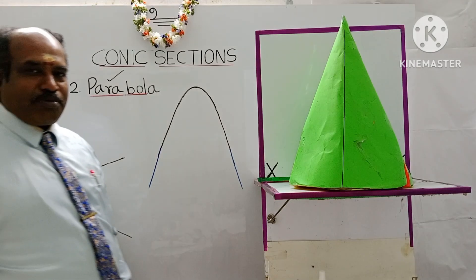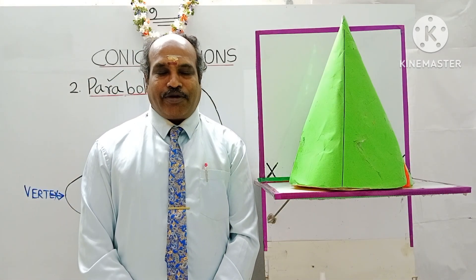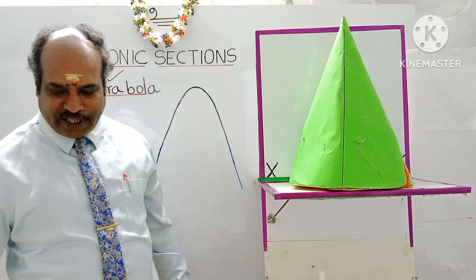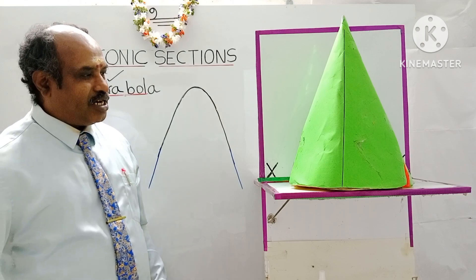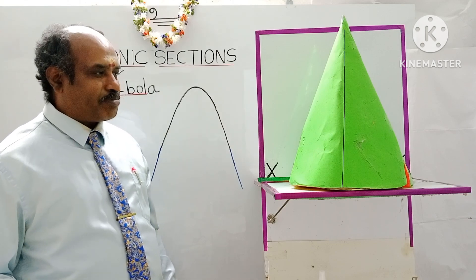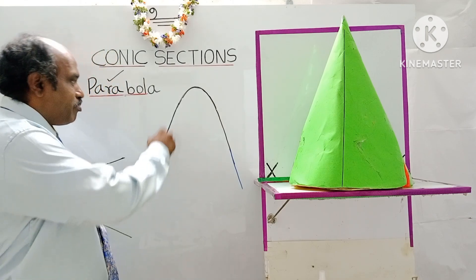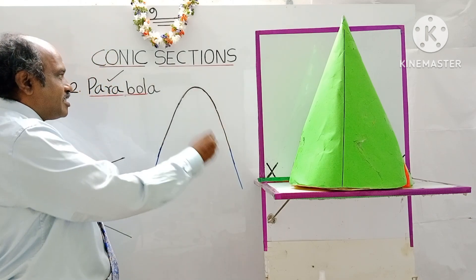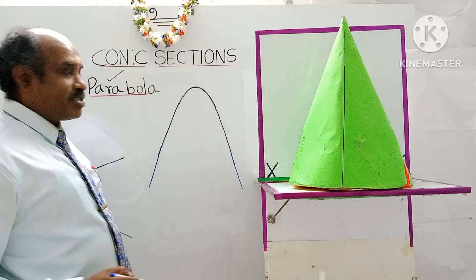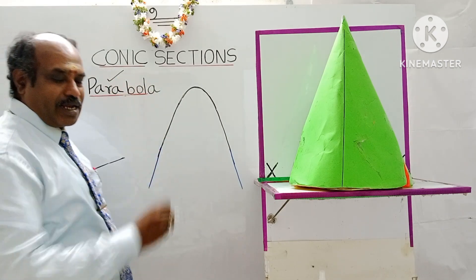The topic is parabolic profile, or simply parabola. I am going to explain how to draw a parabola, and also how the shape of a parabola is obtained. This is a parabolic profile — it is the second conic section. Among the conic sections, this second one is called parabola.